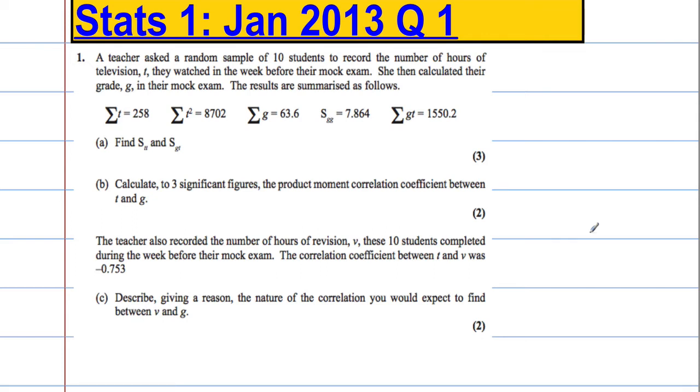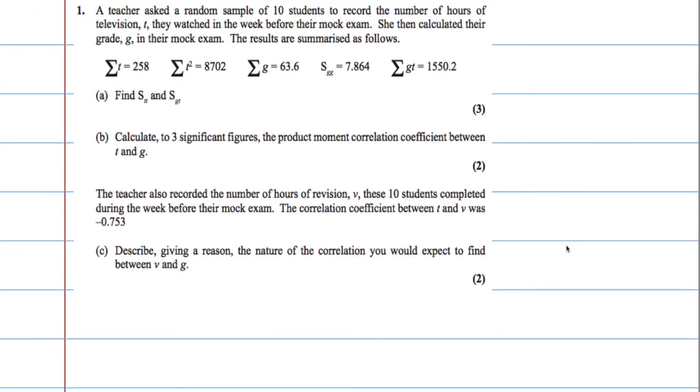Okay, so question 1. A teacher asked a random sample of 10 students to record the number of hours of television, T, they watched in a week before their mock exam. She then calculated their grade, G, in their mock exam. The results are summarized as follows. Part A, find S_TT and S_GT.